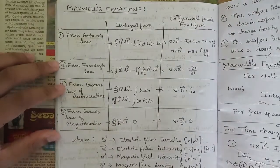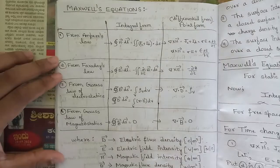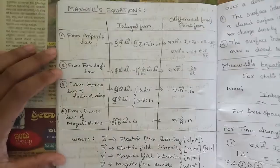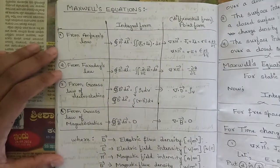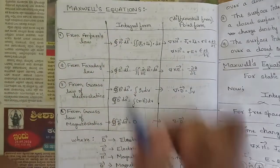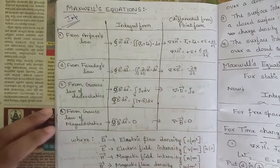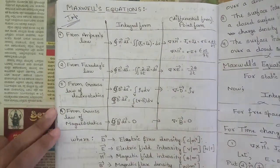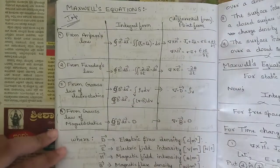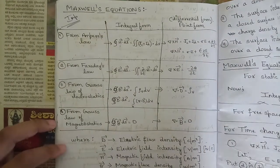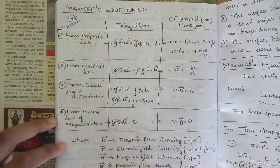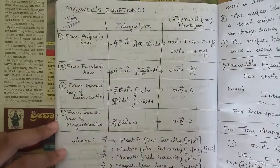Hello everyone, welcome to this new session. In the last session we started with Module 5. In this session we are going to continue with Module 5 only — the next concept is Maxwell's equations. We need to list all the Maxwell's equations derived in Module 4 as well as Module 5, from Faraday's law, Ampere's law, Stokes' theorem, and Biot-Savart's law.